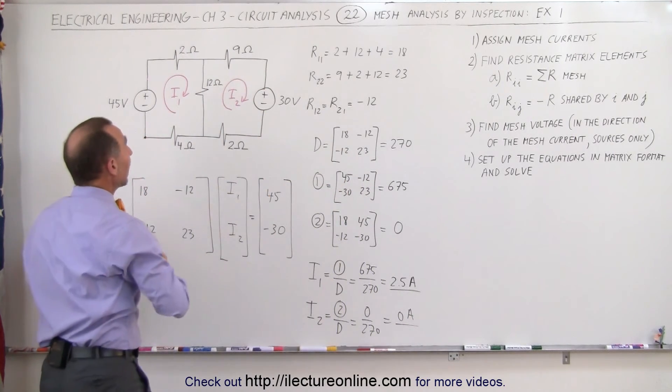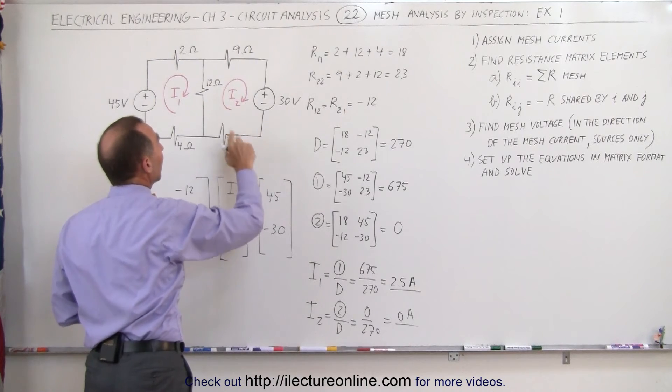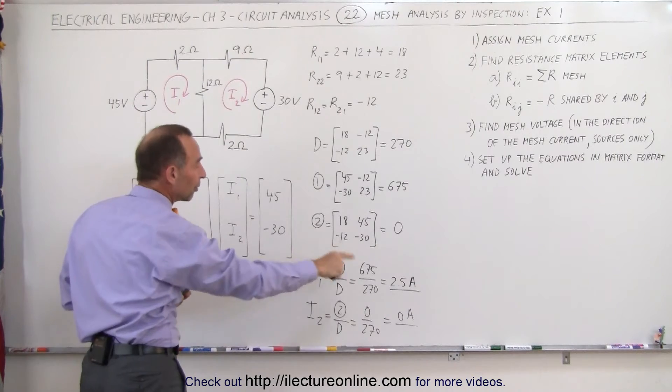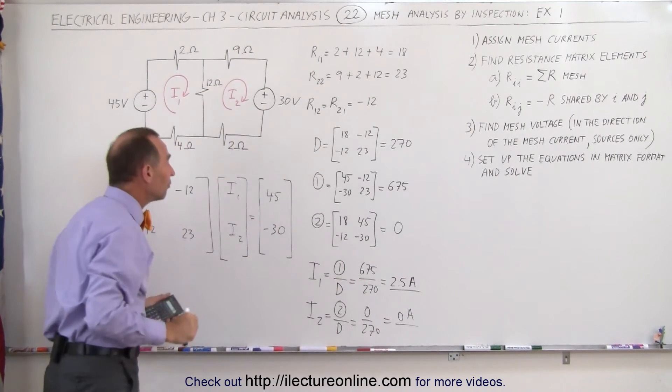That means through the 9 ohm resistor and the 2 ohm resistor we have 0 current, but through the 2 ohm and the 4 ohm resistor we have 2.5 amps. What about through the 12 ohm resistor?